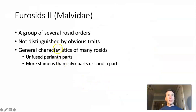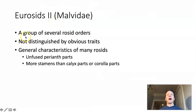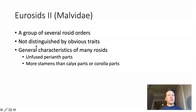The eudicot rosids II — that unexplored group — are also called the Malvidae, but you do not need to memorize this because they are not distinguished by any obvious phenotypic traits. We know this group exists largely based on molecular evidence, and some of this information could change down the road.